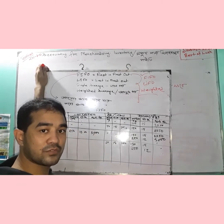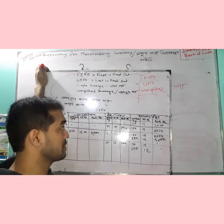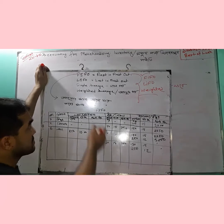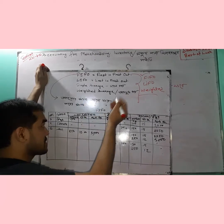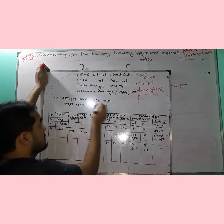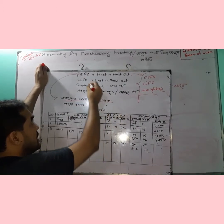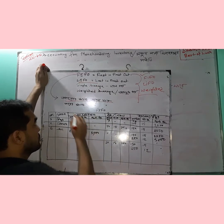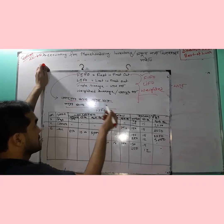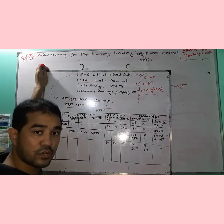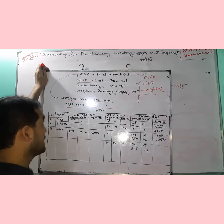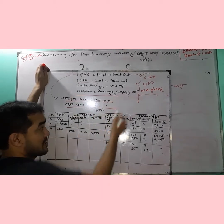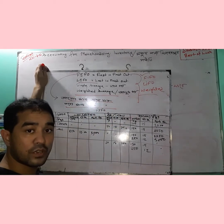FIFO means first in, first out. LIFO means last in, first out. And then there is the average method — the weighted average. So we have three inventory costing methods: FIFO, LIFO, and the weighted average method.